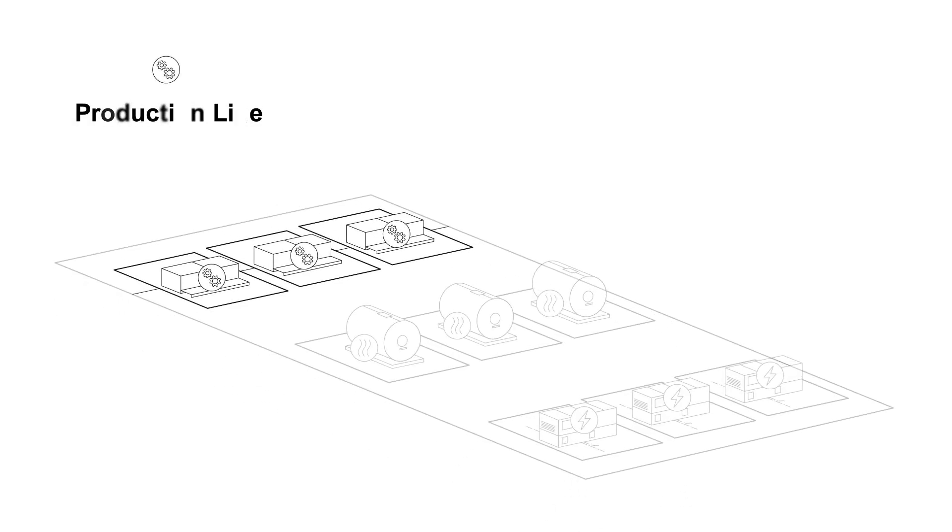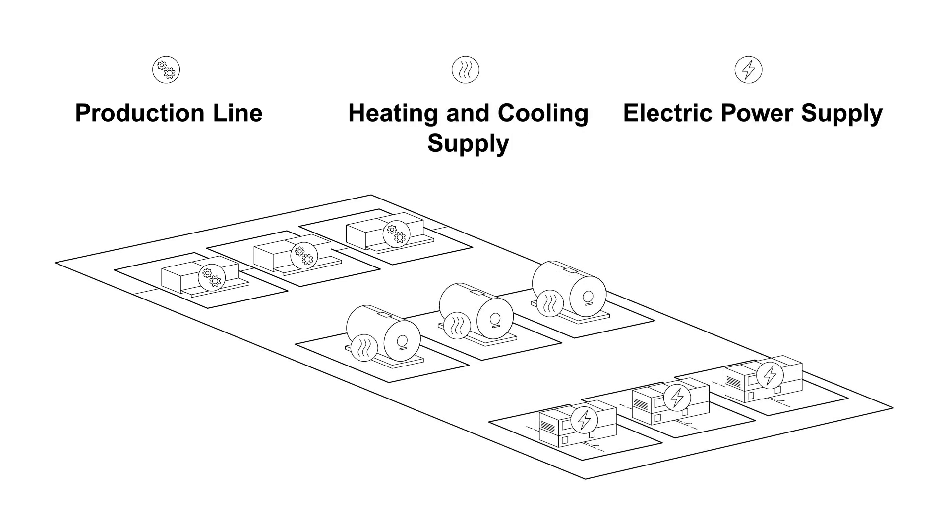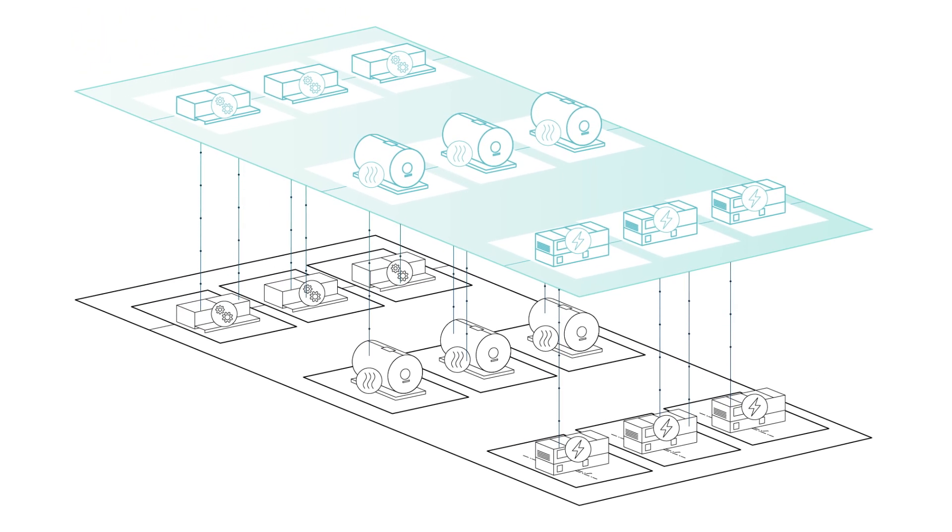Virtual twins of the production lines and their heating, cooling, and power supply are created for a holistic view. These are based on recorded historical data and data generated in real-time. Their different modeling approaches collectively form the Big Data Cloud of the Digital Energy Twin.